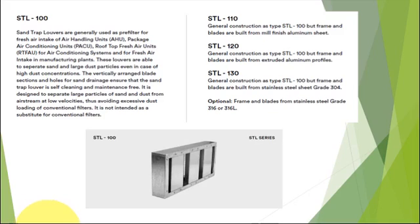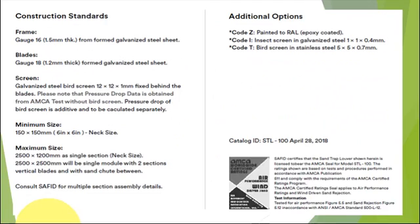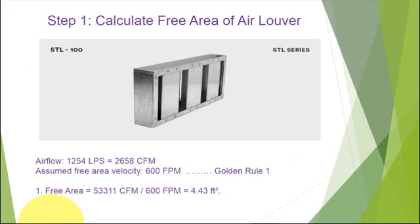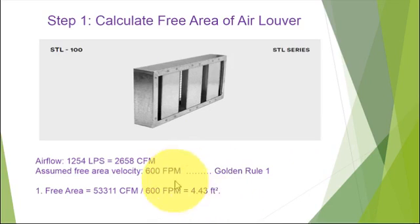Let's go through the procedures to size the proper sand trap louvers. For normal operating conditions, sand trap louvers should be selected for a maximum free area velocity of 600 feet per minute — this is the golden rule for sizing any sand trap louver. The first step is to calculate the required free area, which is the required airflow through the sand trap louver divided by 600 feet per minute. This gives you 4.43 square feet.